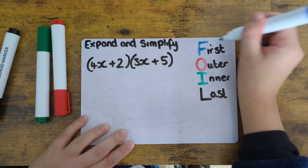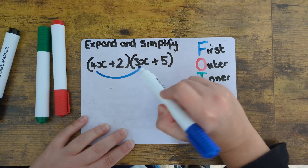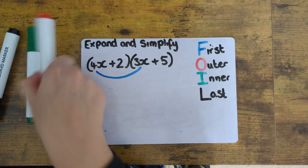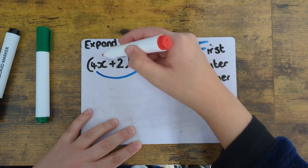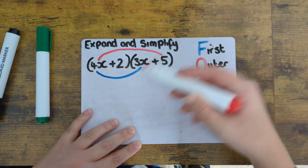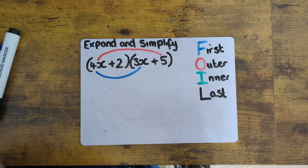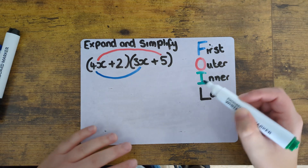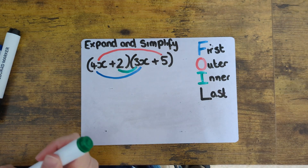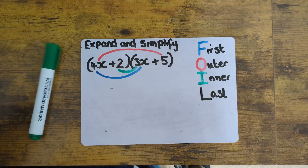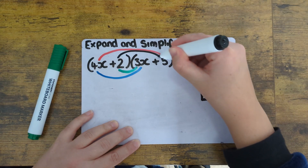For the F, meaning first, we need to join together the first terms in each set of brackets — in this case it's the 4x and the 3x. Then we need to join the terms that are on the outside of both sets of brackets. This is a bit tricky to understand, but in this case it's the 4x and the 5, so they're right on the outside of the terms. Then we need the inner terms — in this case it's 2 and 3x, so they're the ones in the middle of both brackets. And then we've got the last term in each set of brackets, which in this case is the 2 and the 5.